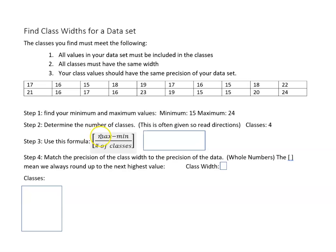This is the formula we're going to use: the maximum value minus the minimum value divided by the number of classes. So we said our max and minimum was 24 and 15, and if we divide by 4 we get 2.25.